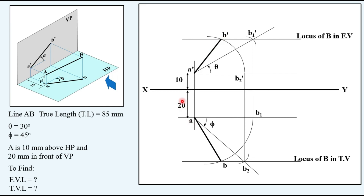To verify your solution: A-dash and A should lie on a single vertical projector. If you draw a vertical line from B-dash, then B should be on the same line — if so, you have drawn the correct solution. Also note that the angle made by the front view is not theta — it is more than that. Similarly, the angle made by the top view is more than phi. These are apparent angles: the front view makes apparent angle alpha, and the top view makes apparent angle beta.